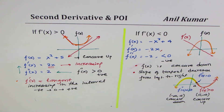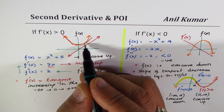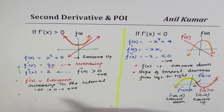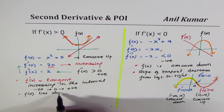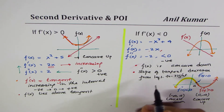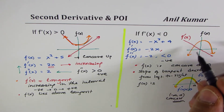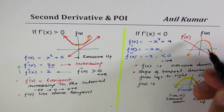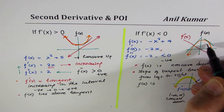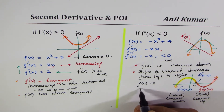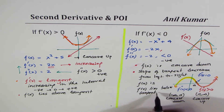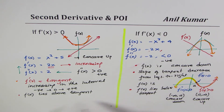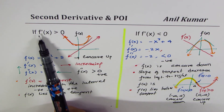Another observation: for a concave up curve, if we draw a tangent at any point, the curve lies above the tangent line — so f(x) lies above the tangent. For a concave down curve, if we draw a tangent, the graph lies below the tangent line. These are important properties to understand when the second derivative is positive or negative.